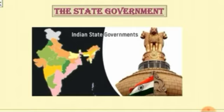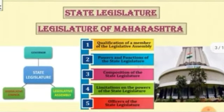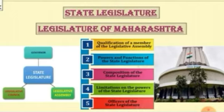The nature of government machinery in all states of India is the same. However, Jammu and Kashmir is an exception. Let us now study the nature of governance in the state with reference to Maharashtra. Like the parliament at the central level, every state has its own legislature.